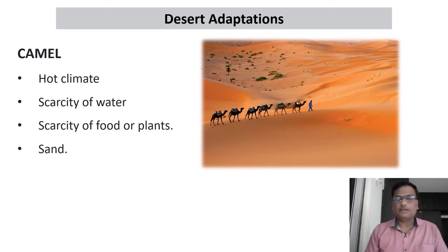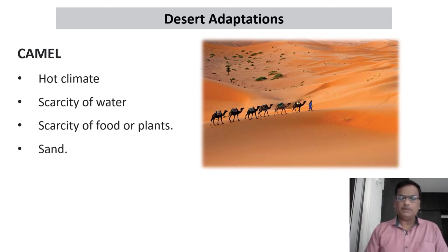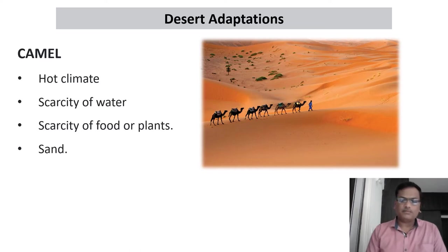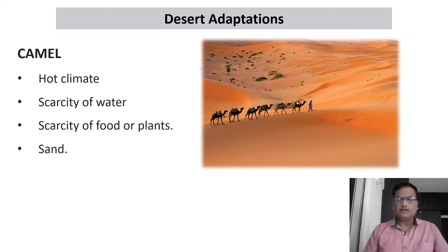The climate is very hot during the daytime — intolerable, with temperatures crossing 40 degrees Celsius, which is very dangerous for normal animals. The animals will die because of the hot climatic condition and dehydration. It is very difficult to find water in the deserts; water is restricted to some isolated areas called oasis.